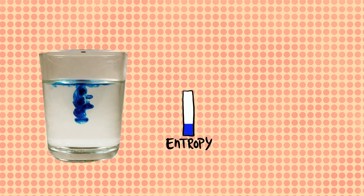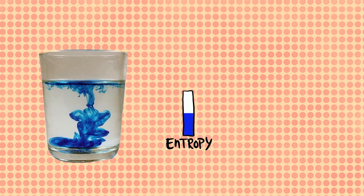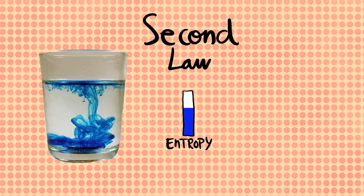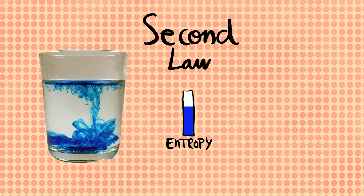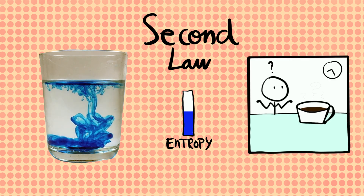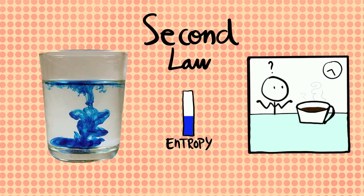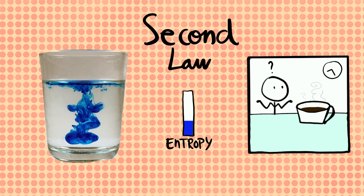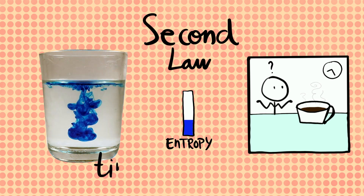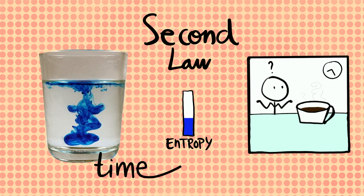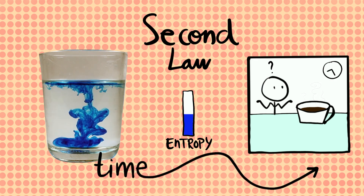Ink and water evolve towards higher entropy states, as dictated by the second law. But why is that? Why do we never see ink spontaneously unmixing from water, or coffee getting hotter at our dining table? The second law seems to select the sequence in which things can spontaneously happen. In other words, the second law imposes the direction of time — and this direction seems to be from order to disorder.